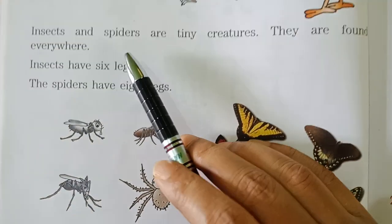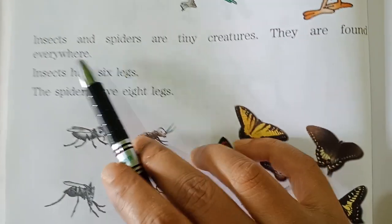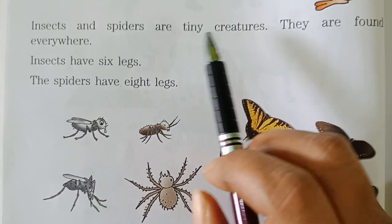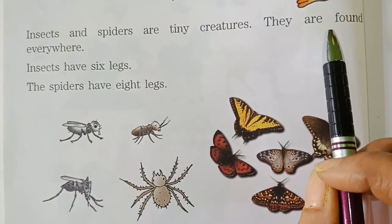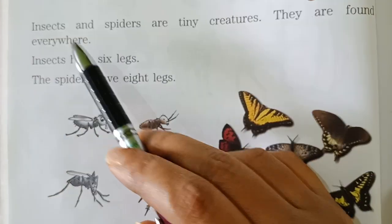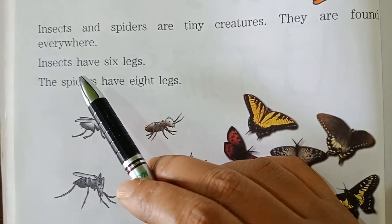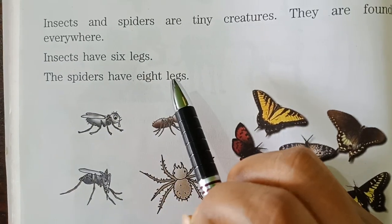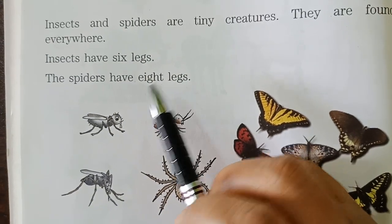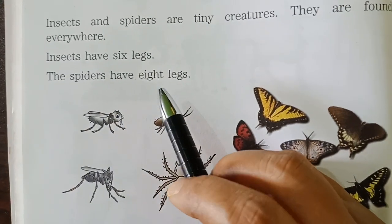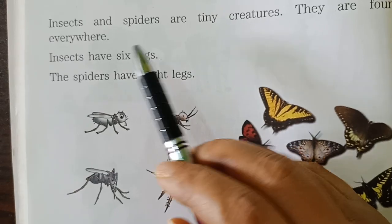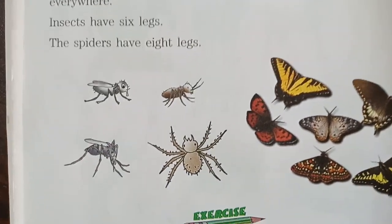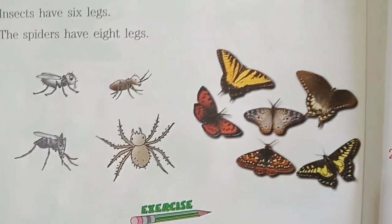Now let us discuss about insects. Insects and spiders are tiny creatures found everywhere. Insects have six legs. The spider has eight legs — it is also an insect but has eight legs. In general, insects have six legs.